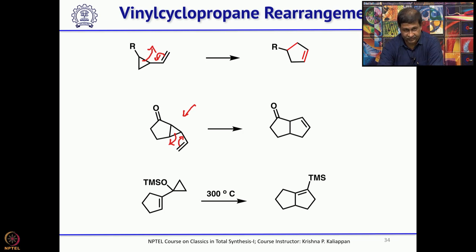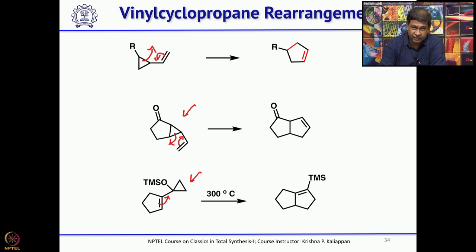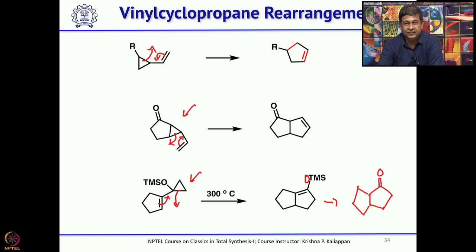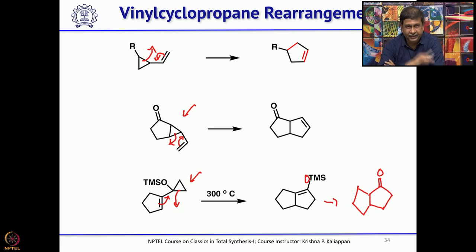This gives a diquinane. In another example, you have a cyclopropane attached to a double bond, where the double bond is part of a 5-membered ring. This gives you an enol TMS ether, and one can hydrolyze this to get the corresponding ketone. If you hydrolyze with acid, you get the corresponding diquinane having a carbonyl group. This vinyl cyclopropane rearrangement has been used to make at least two 5-membered rings, if not three or four.